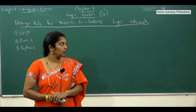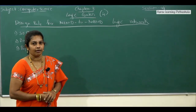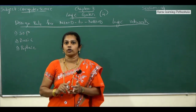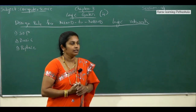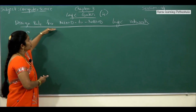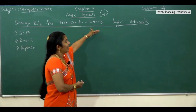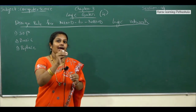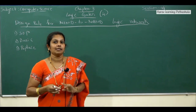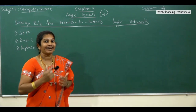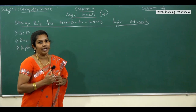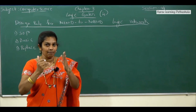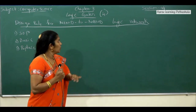Today we are going to continue the previous session. In the previous section we explained how to write the circuit diagram as well as how to prove NAND and NOR as universal gates. Today we are going to explain the design rule for NAND-to-NAND logic network. In the exam if they ask you to write the circuit diagram using only NAND or only NOR symbol, we are going to explain how to do that.